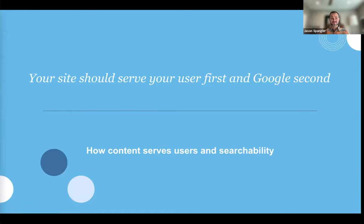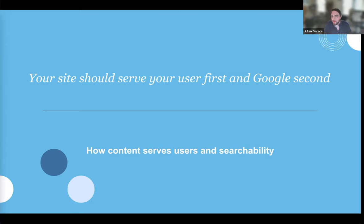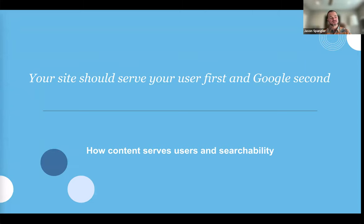Your site should serve your user first and Google second. All the things we mentioned — while they have an effect on SEO — are a huge benefit for the people using your site. A lot of people need to remember who they're targeting and what message they're ultimately trying to say. With the rise of AI, search is changing rapidly, and ensuring your messaging speaks directly to your target audience is what will keep you towards the top of results.